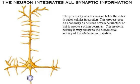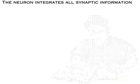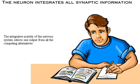The process by which a neuron tallies the votes is called cellular integration. This process goes on continually as neurons determine whether or not to produce action potentials. This neuronal activity is very similar to the fundamental activity of the whole nervous system — the integrative activity of the nervous system selects one output from all the competing alternatives.